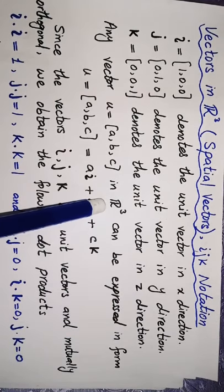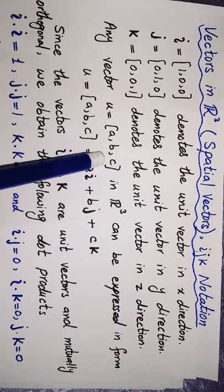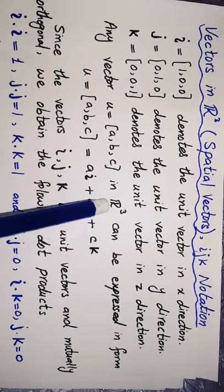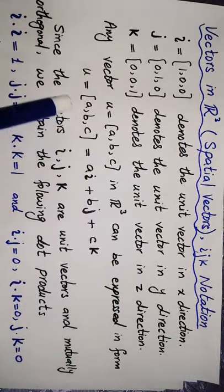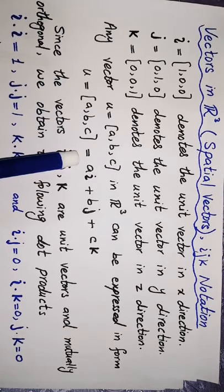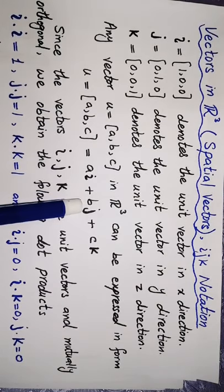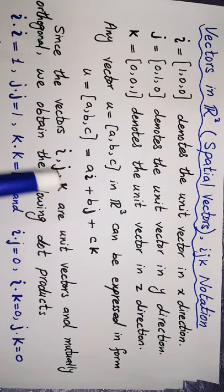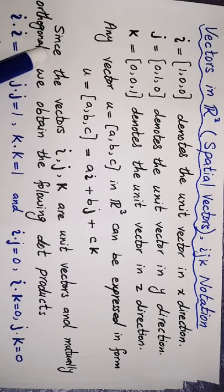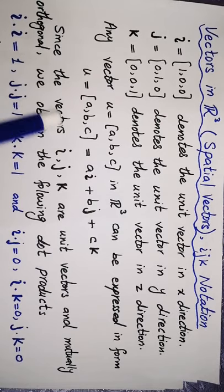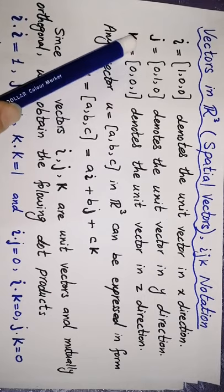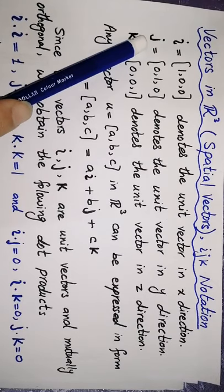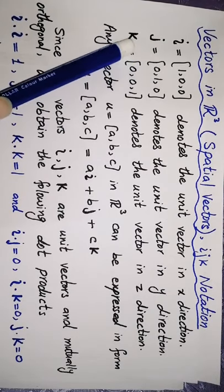If we write a vector in R3, we can represent (a, b, c) in R3 in the form: (a, b, c) equals a·i plus b·j plus c·k. The i, j, k are unit vectors, and these unit vectors are mutually orthogonal.